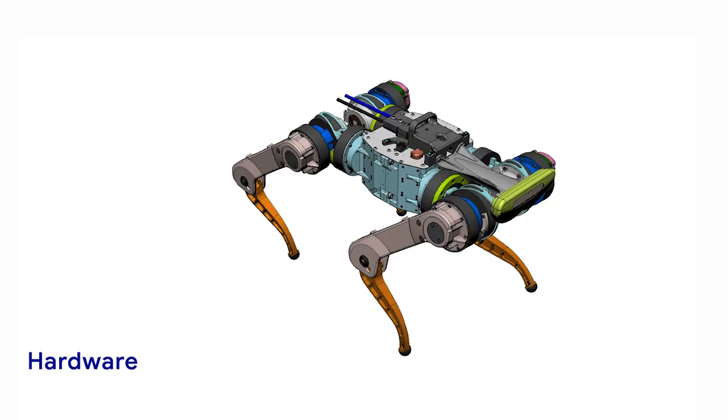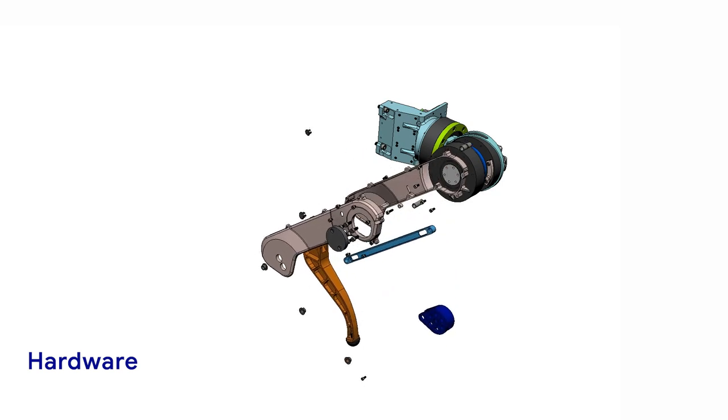We evaluate our policies using a custom-built quadruped robot that weighs 11.5 kilograms and has 12 degrees of freedom.